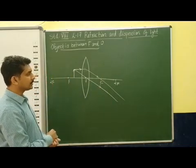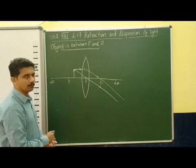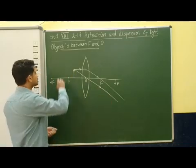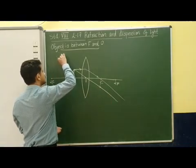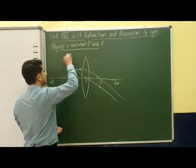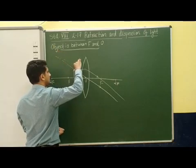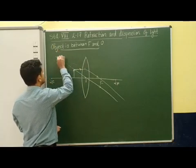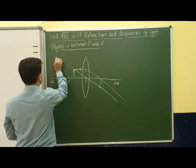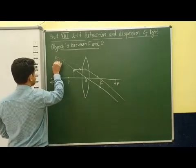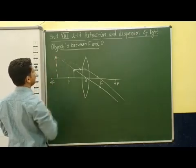When we observe the rays, we can see that they are not converging in front of us. So we are extending them behind this lens. You can see that these light rays we are extending in this manner, and we are forming the image at this point.